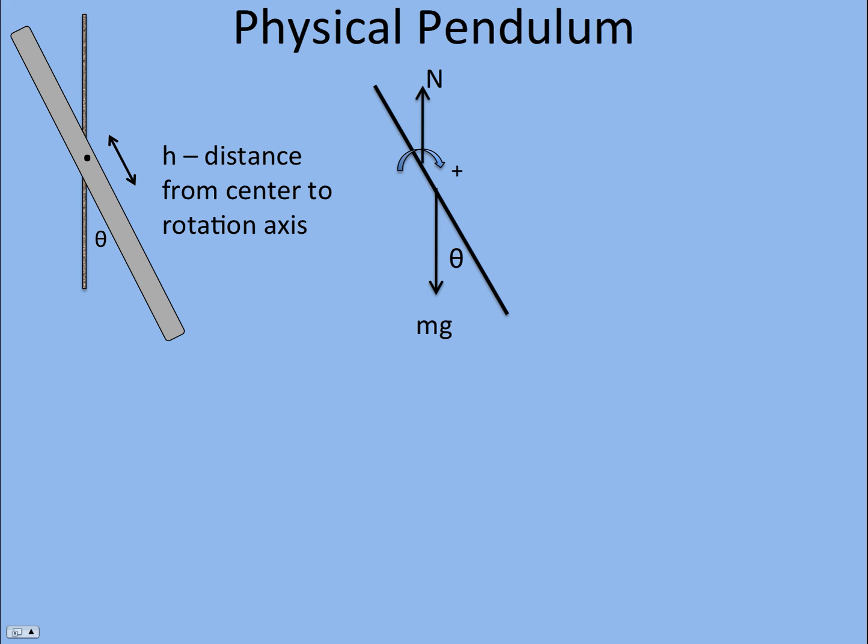If we do a free body diagram, we have weight coming from the center of mass, there's a normal force where the pivot is, but we can sum the torques about that point so it won't matter. This angle theta would also be the angle between the rod, or whatever the object's axis is, and the weight. The sum of the torques would be mg sine theta.